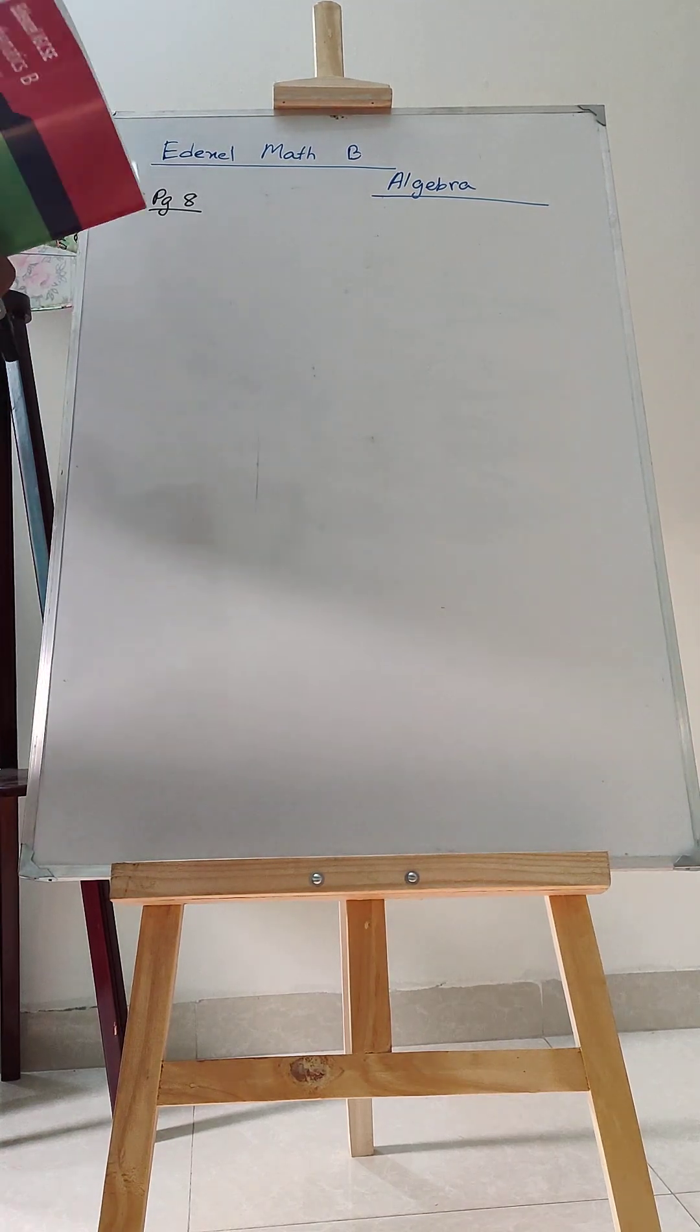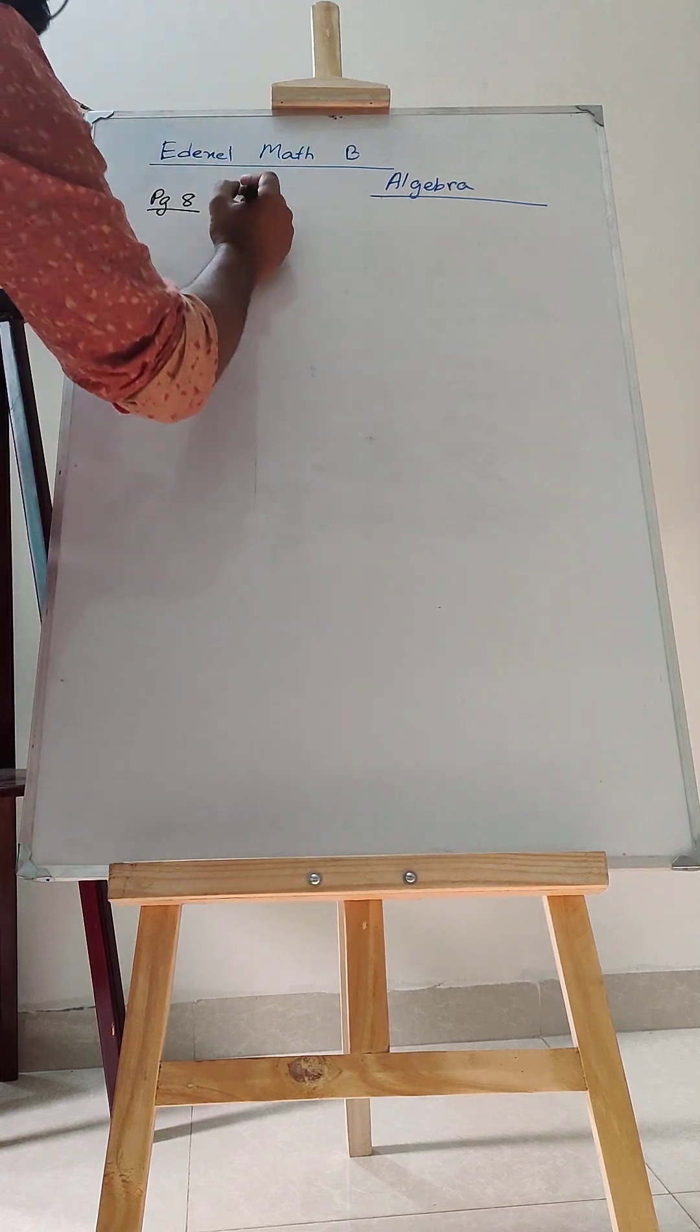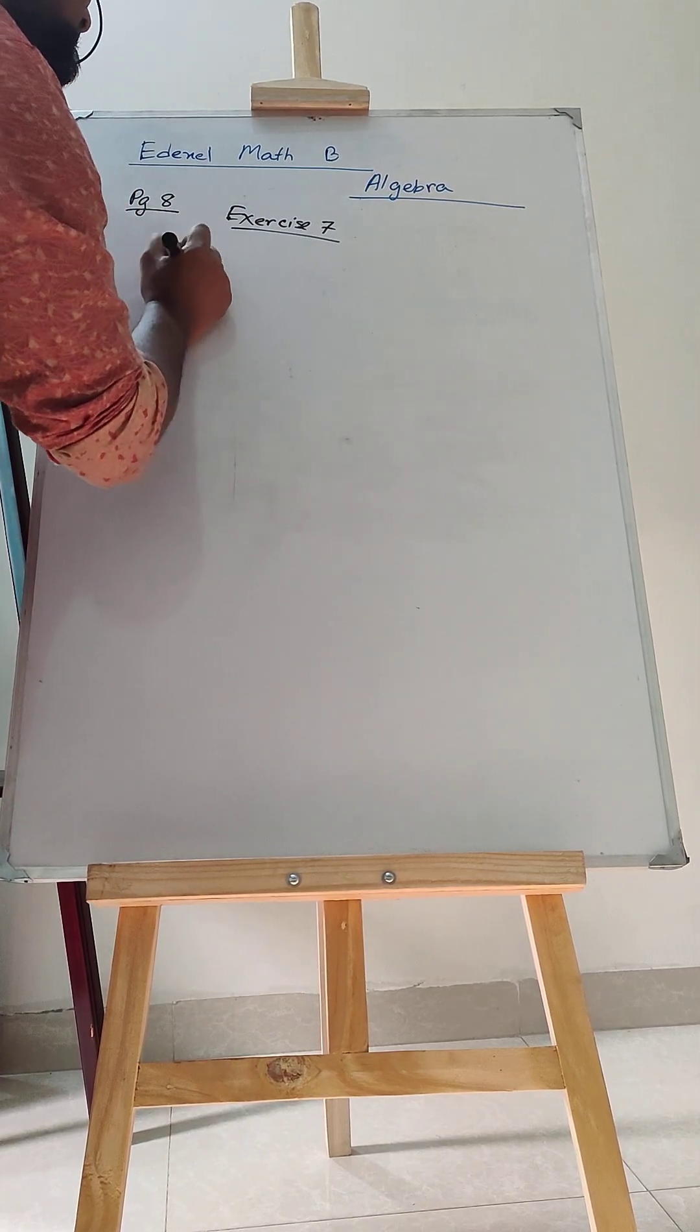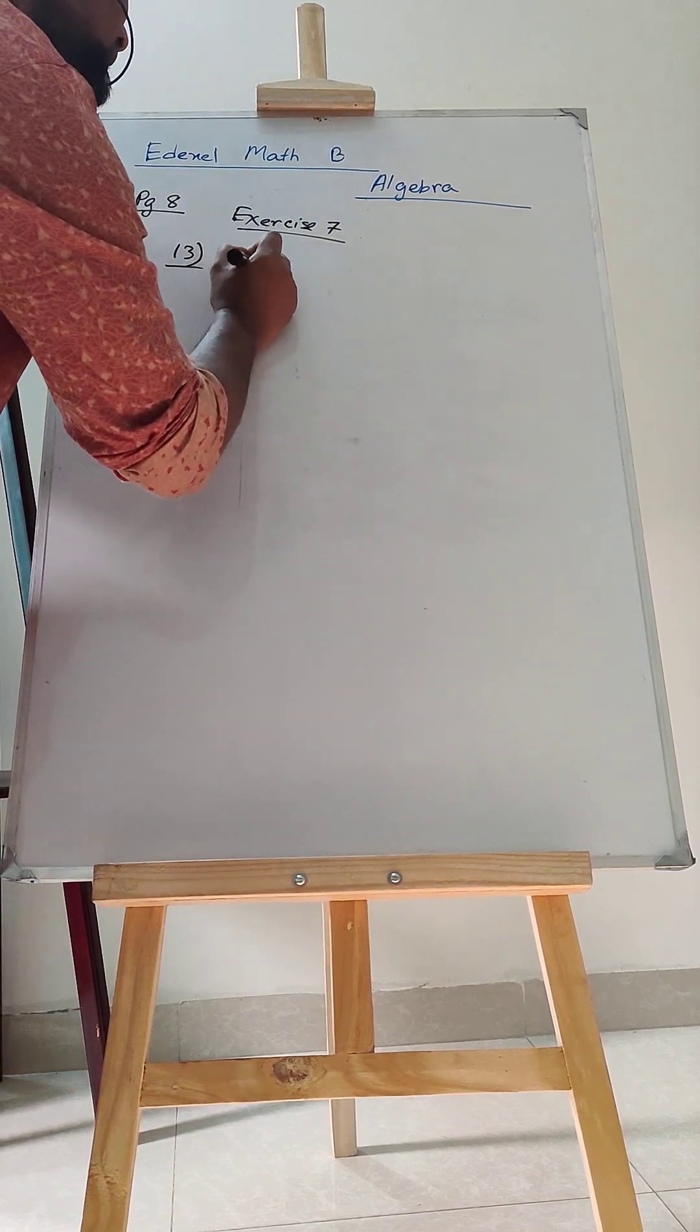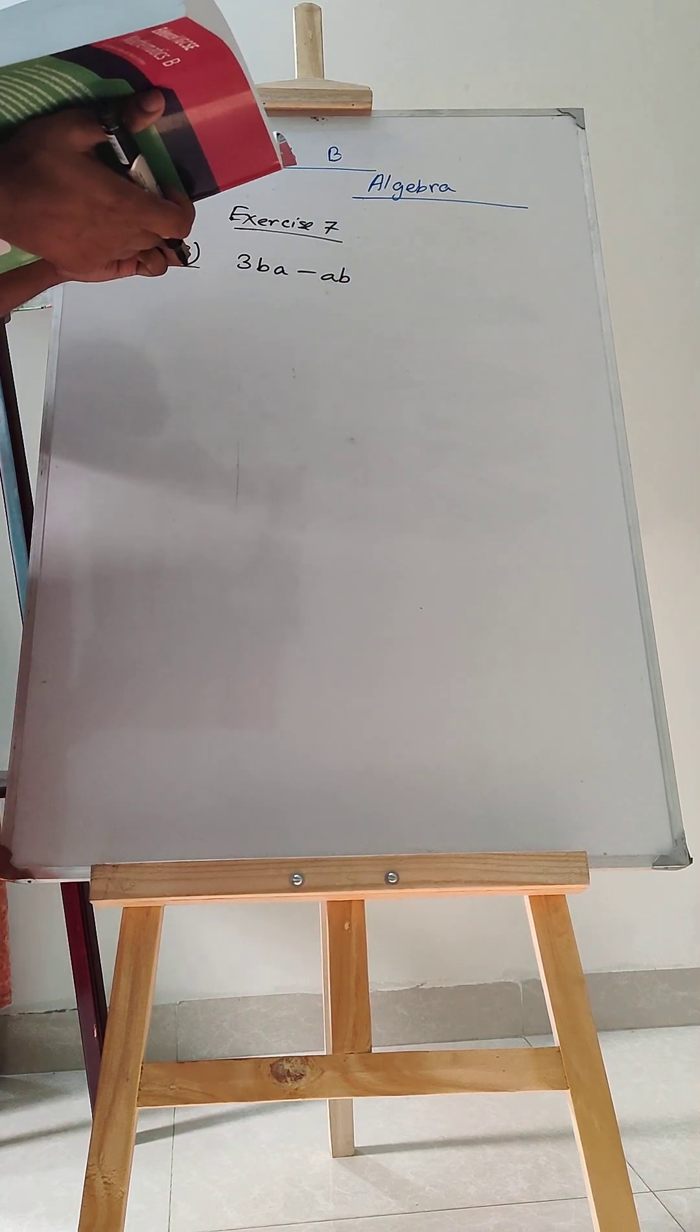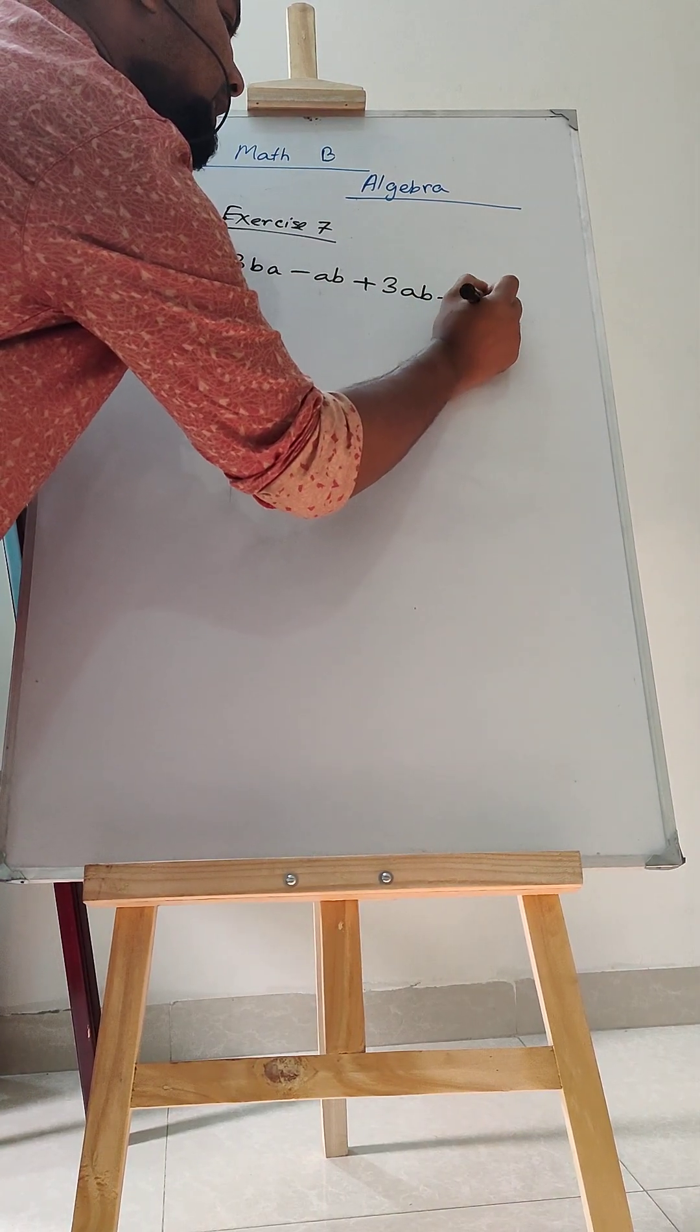Let me first give you some preliminary idea before doing this one. Let's do exercise number 7, math number 13. It says 3BA minus AB plus 3AB minus 5AB.